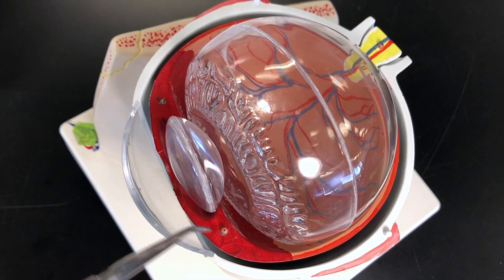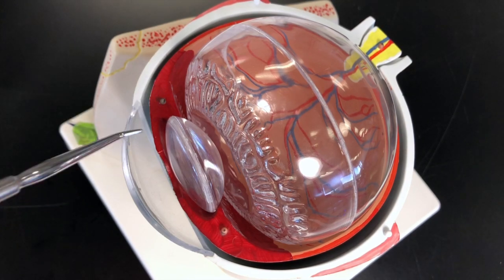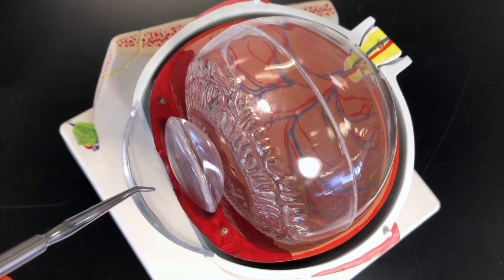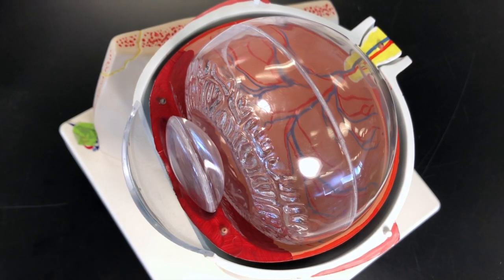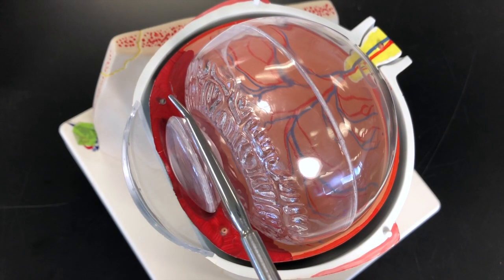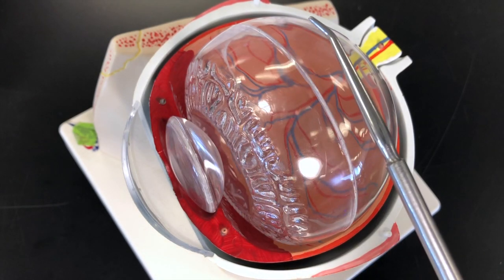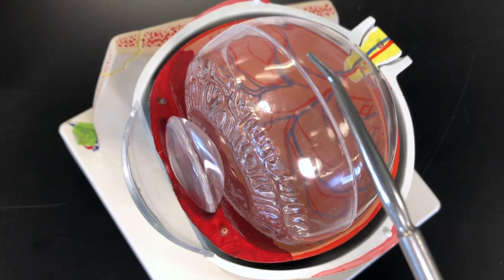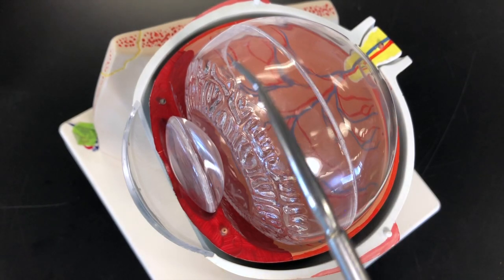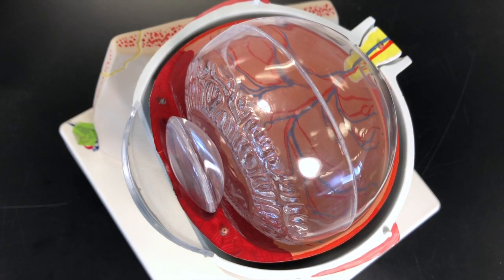You can think of the iris as the divider between the anterior and posterior chambers. That aqueous humor, which is produced by the ciliary processes here, is going to constantly circulate and deliver oxygen and nutrients to the lens and the cornea. And then lastly, from the lens and posteriorly, we have the vitreous chamber, which is filled with vitreous humor. That thick, jelly-like liquid is going to help support the retina and keep the shape of the eyeball.